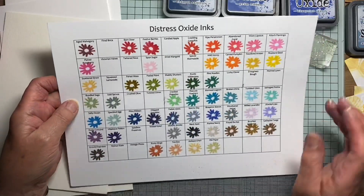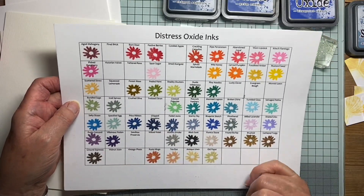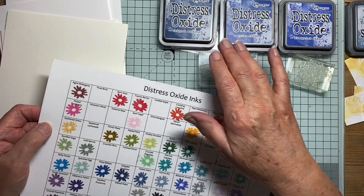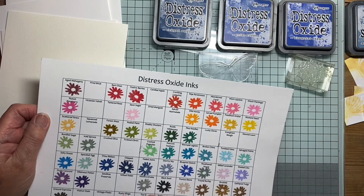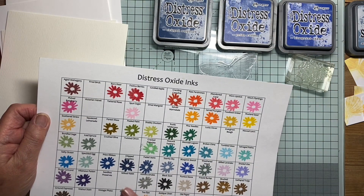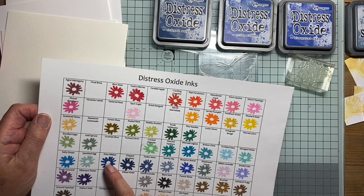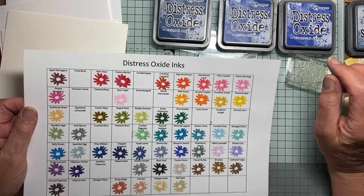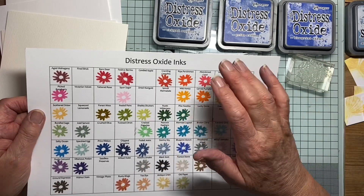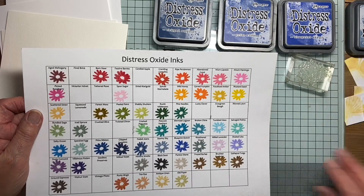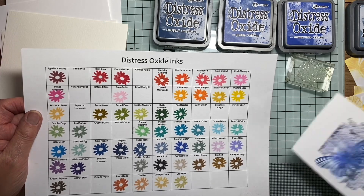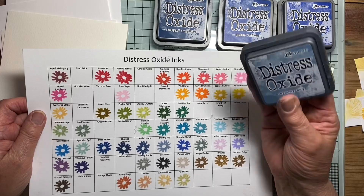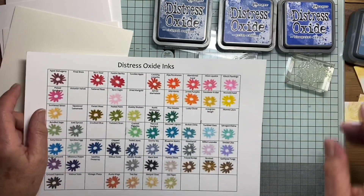Today I'm going to have a go with some of the blues. What I've chosen is Chipped Sapphire, which is a deep one, Prize Ribbon, and Blueprint Sketch. And for a little bit of interest in the background, I've been playing about with stamps and I prefer this lighter one — this is Stormy Sky — for just a bit of interest in the background.